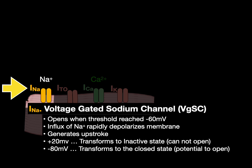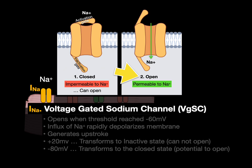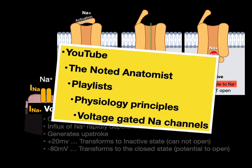The sodium channel remains inactive until the membrane repolarizes to negative 80 millivolts, then transforms to the closed state which has the potential to open. Voltage-gated sodium channels have three states: closed — impermeable to sodium but able to open; open — when threshold at negative 60 millivolts is reached, allowing sodium influx; and inactive — at the peak upstroke of positive 20 millivolts, impermeable to sodium during the refractory period. The channel cannot open until repolarization back to negative 80 millivolts returns it to the closed state.